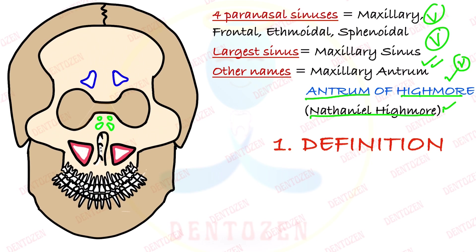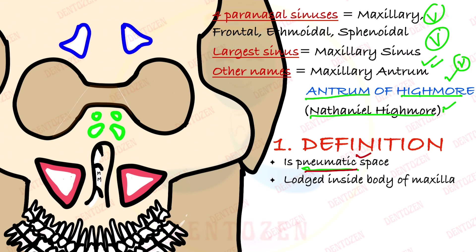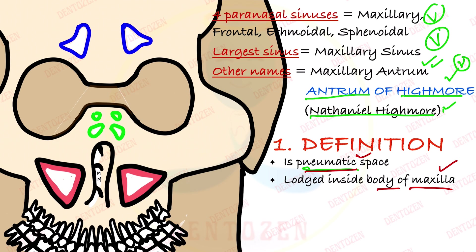Now let's talk about its definition, divided into three parts. First, what it is — it is a space, but a pneumatic space, meaning it is filled with air. Second, where it is placed: inside the body of the maxilla. The maxillary bone has various processes, but this sinus is present in the body — the central part of the maxilla.